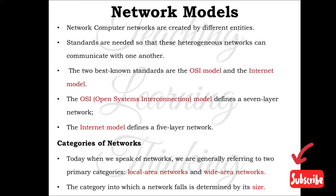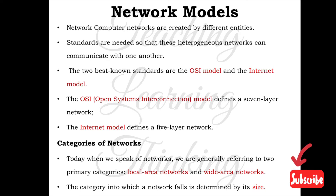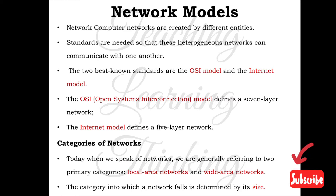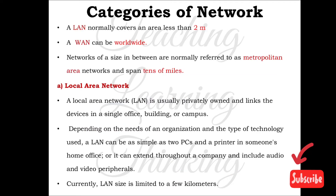When we speak of networks, we are generally referring to two primary models: Local Area Networks and Wide Area Networks, that is LAN and WAN. The category into which a network falls is determined by its size. For example, when in an office or a school, we use a Local Area Network. A LAN normally covers less than a few kilometers, while a WAN can be a worldwide network.